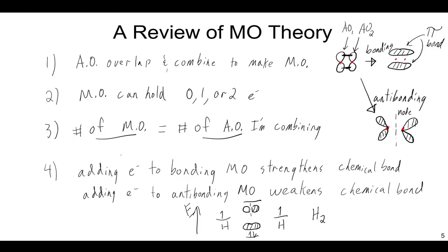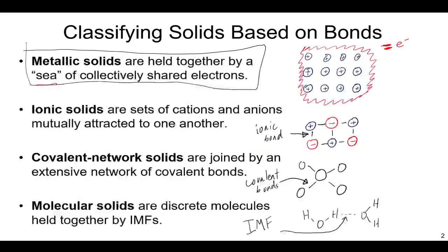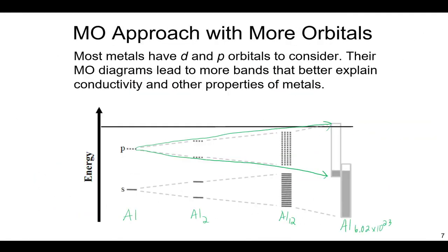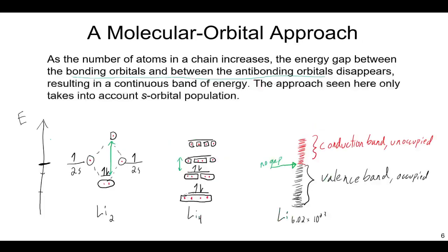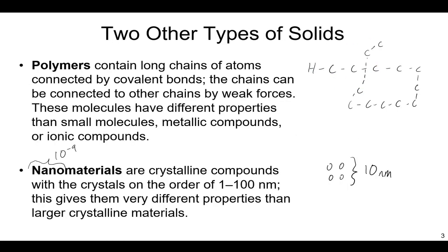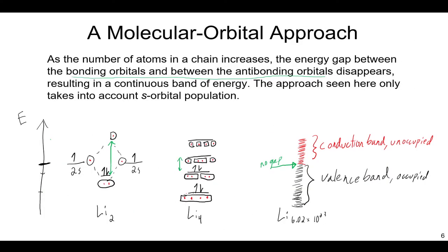That's our molecular orbital theory look at metallic bonding and the classification of different types of solids. In the next lecture, we'll go as deep into ionic, covalent, and molecular solids as we did here with metallic bonding. After that, a separate lecture will cover polymers and nanomaterials.